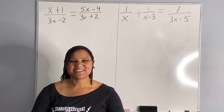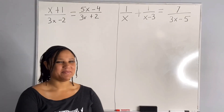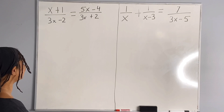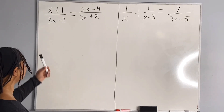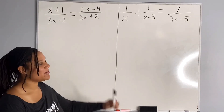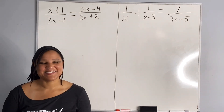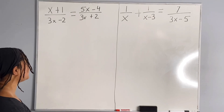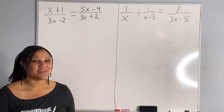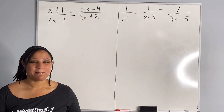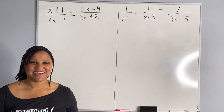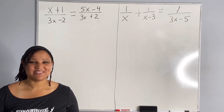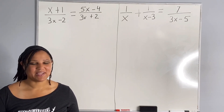Let us look at our first problem. We have an algebraic expression in the denominator on both sides of the equation. So we want to solve for x by multiplying both sides of the equation by the least common denominator.